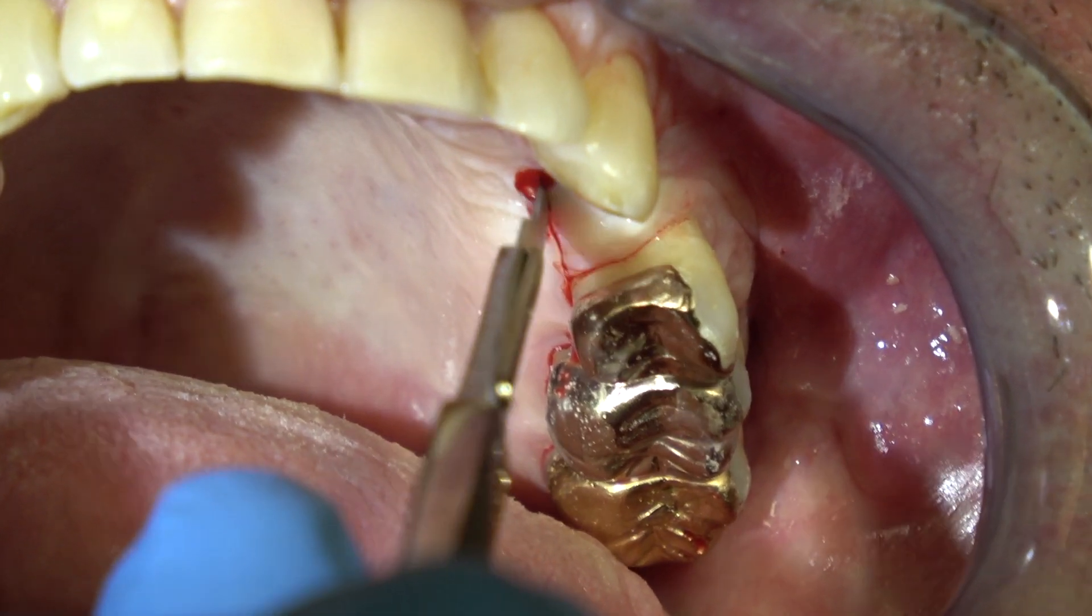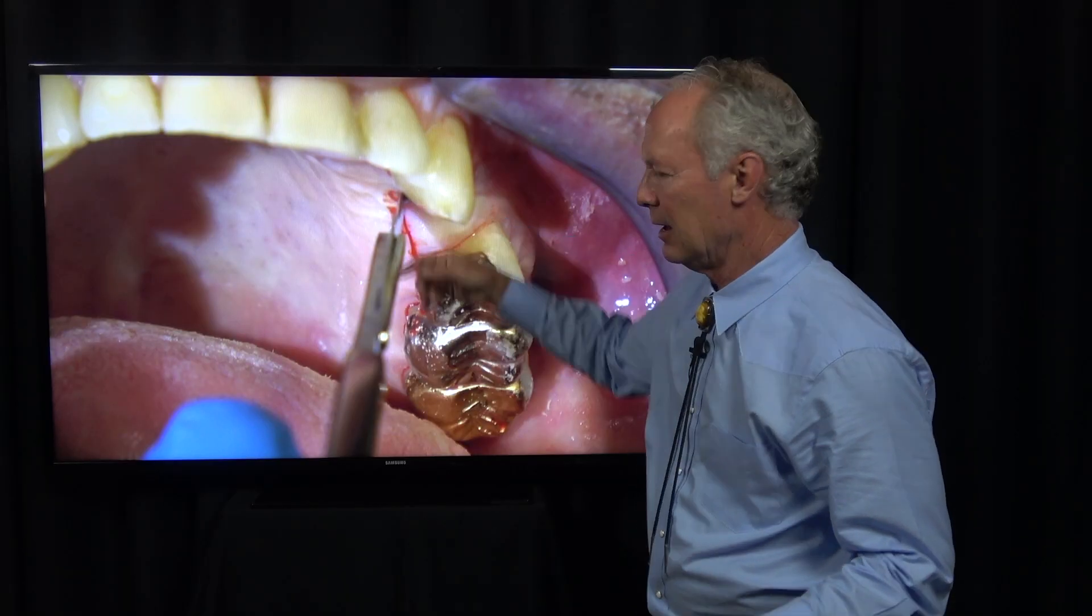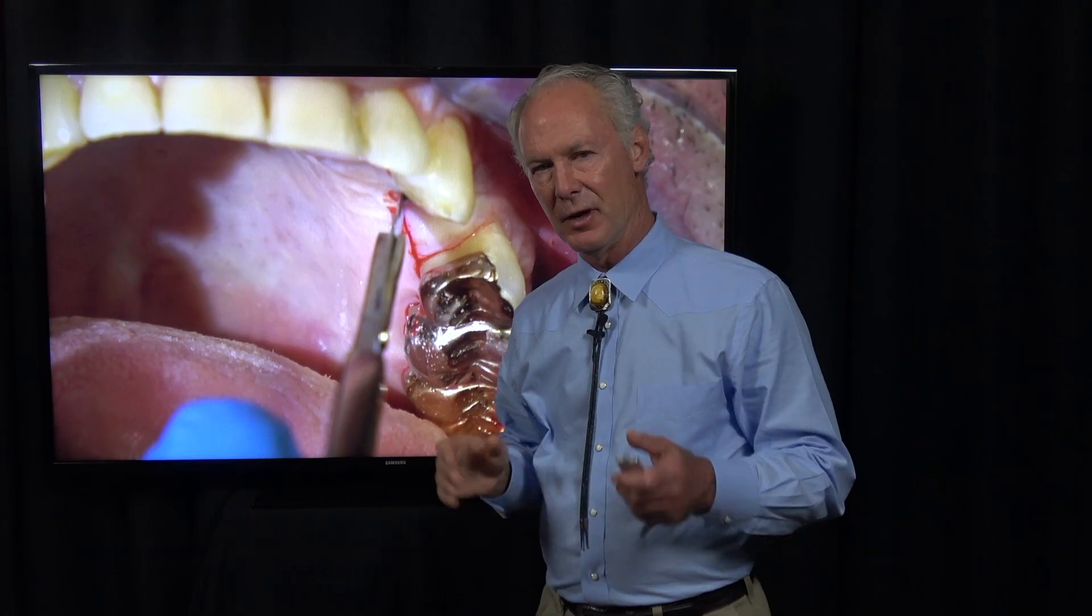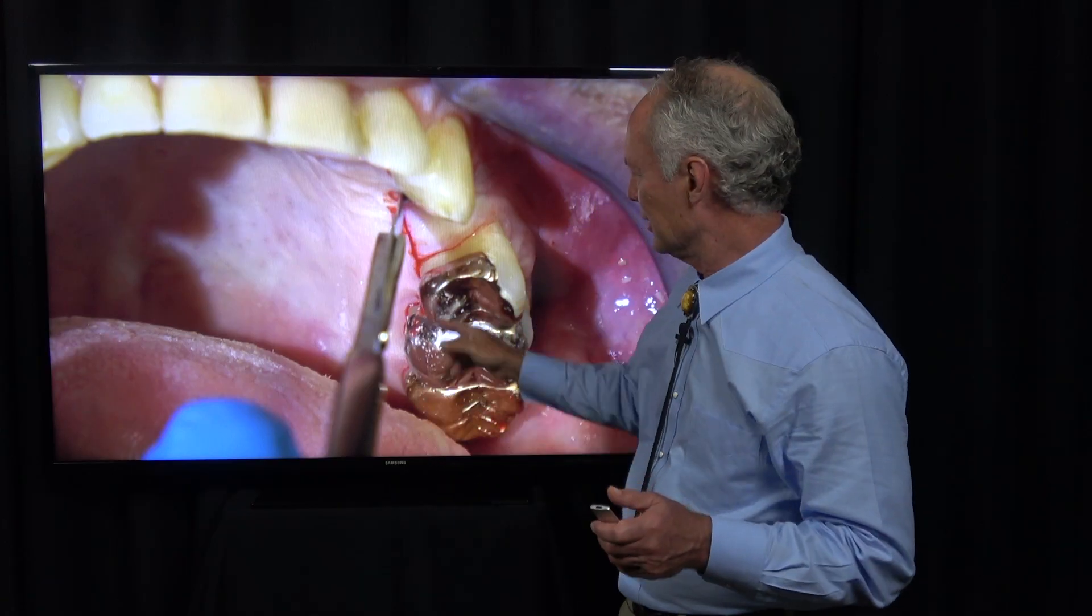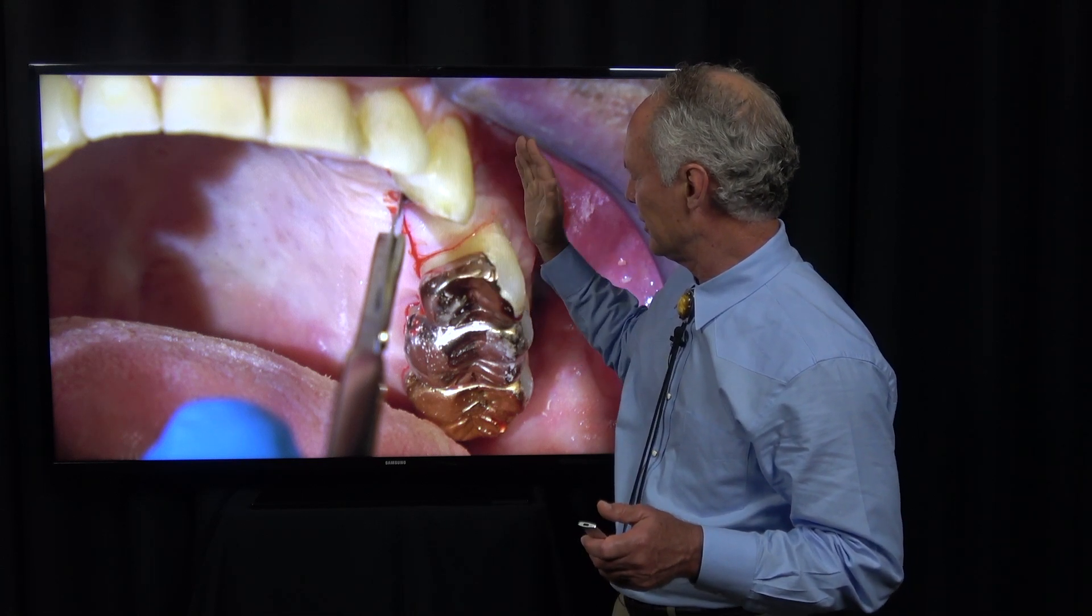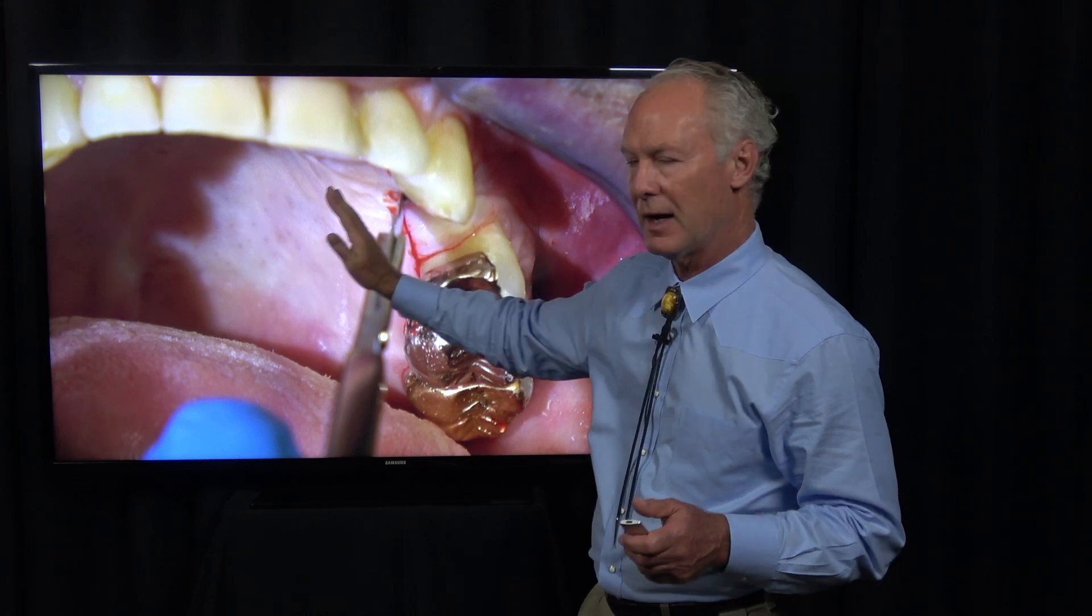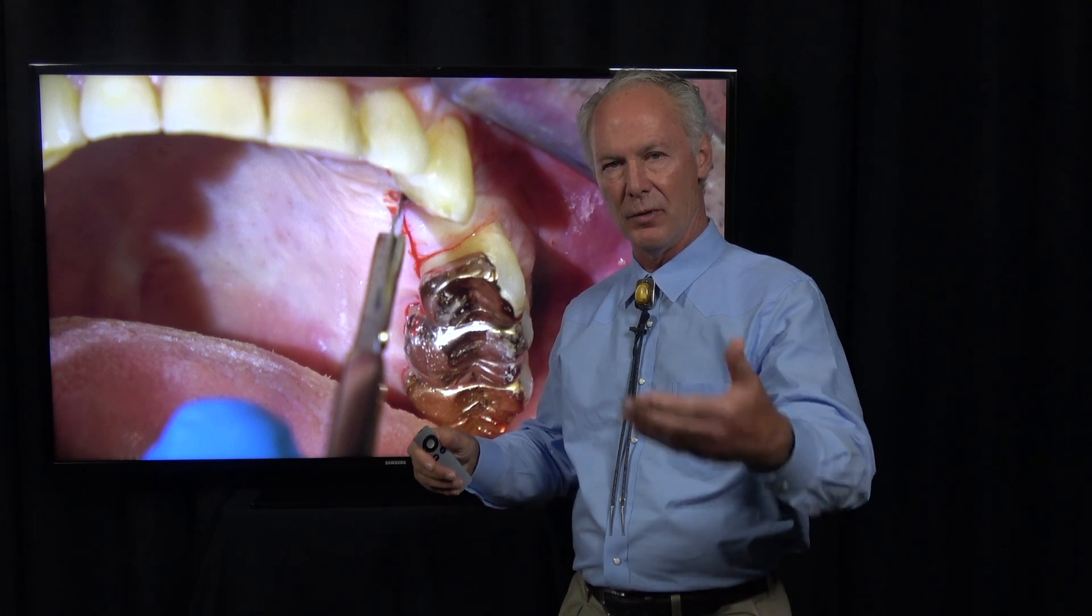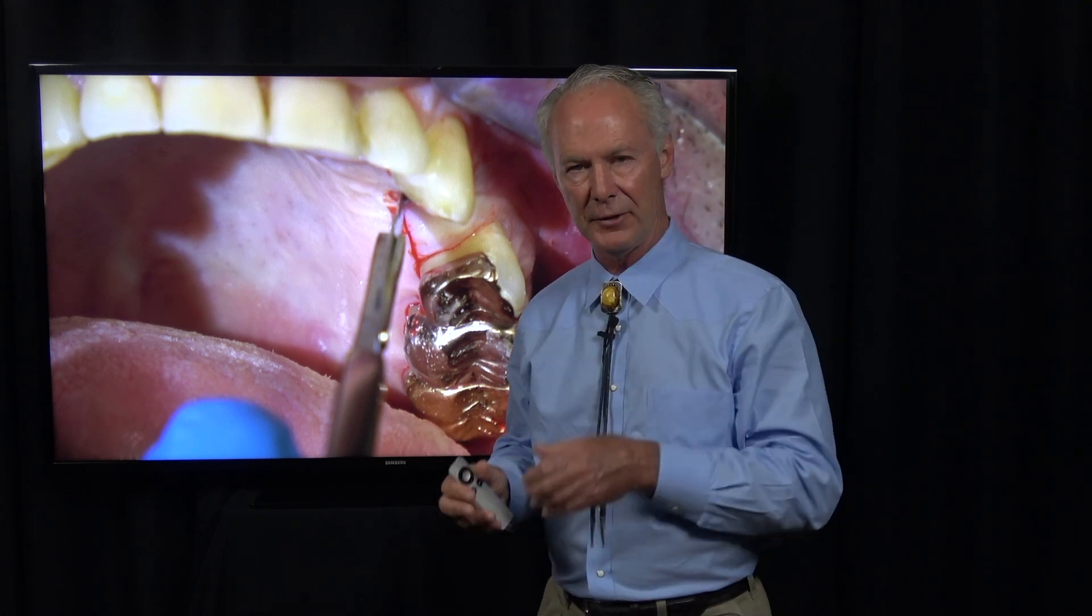Make your incision on the palatal side. In the maxilla, you always want to reflect the flap toward you, toward the facial. Never make the incision down the center of the edentulous area. You don't want a palatal flap and a facial flap because you'd have to retract both. You just want one flap coming toward the facial.